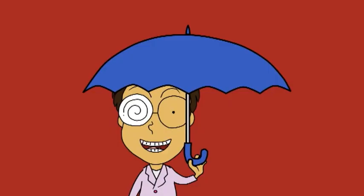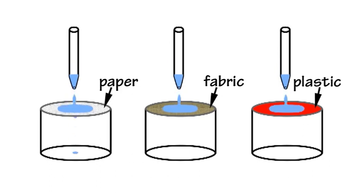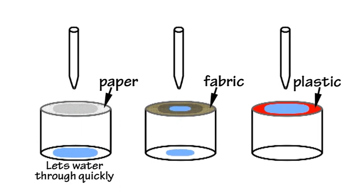You can test the properties of a range of materials to see which is best suited for a particular purpose. For example, in designing an umbrella, you want to choose a material that is waterproof. So you could test a range of materials such as paper, fabric, and plastic to see how waterproof they are by stretching them over a container and dropping water on them and measuring how much water they let through.